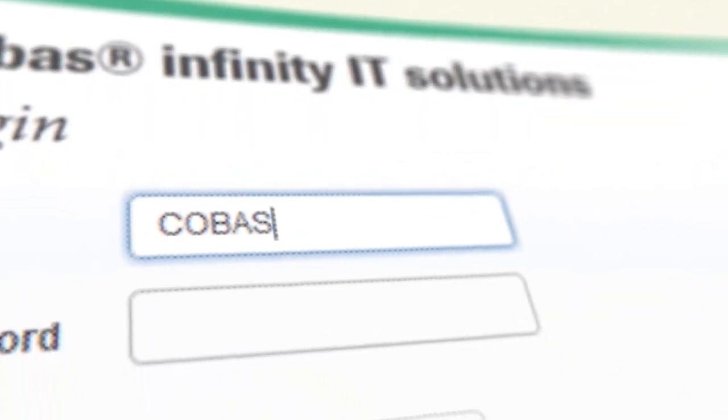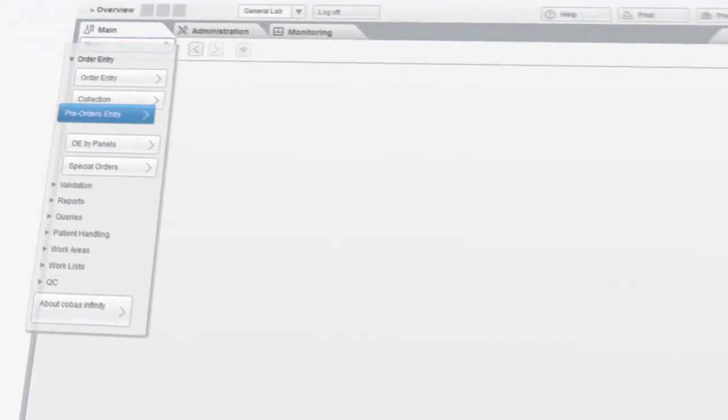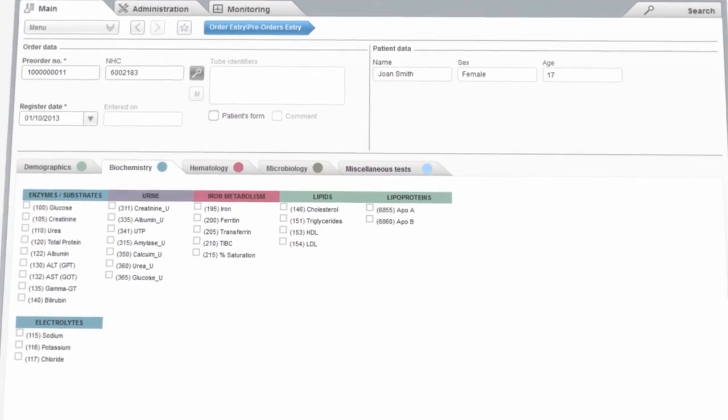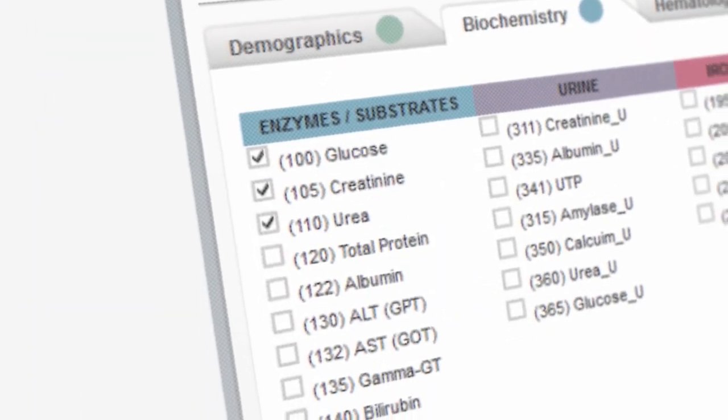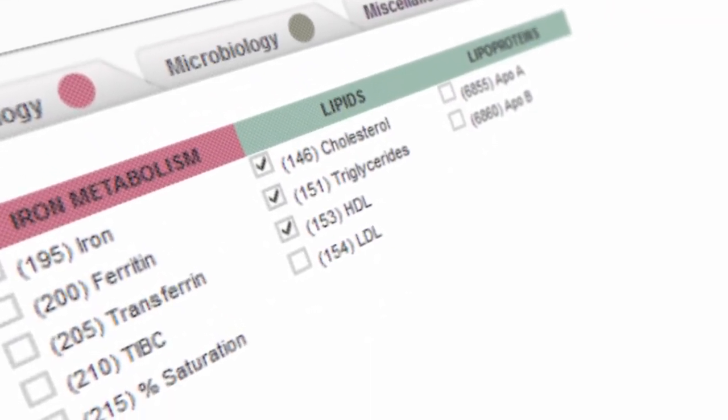The Cobas 4000 analyzer series offers virtual automation with Cobas Infinity IT solutions. Cobas Infinity provides a customized and standardized solution for low volume labs, the 3R solution. 3R stands for request, result and report.